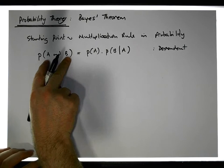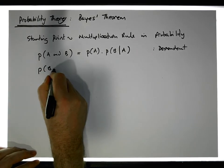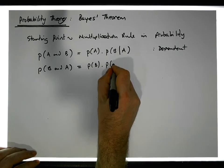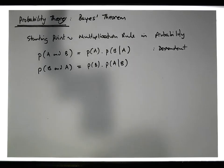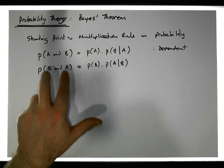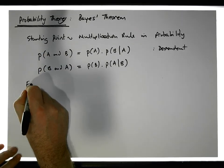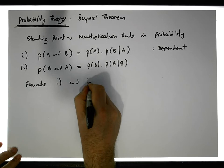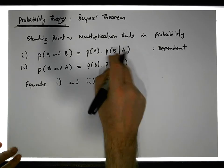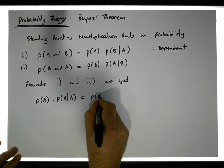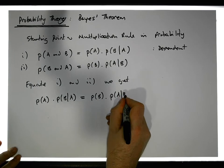That's one way to write the rule. We could also calculate the probability of B and A happening, which gives us the probability of B times the probability of A knowing that B has occurred. These are two versions of the same thing. Since P(A and B) equals P(B and A), when we equate these two expressions — let's call them I and II — we get that P(A) × P(B|A) = P(B) × P(A|B).